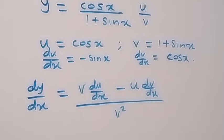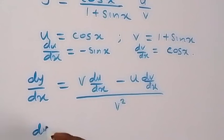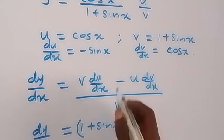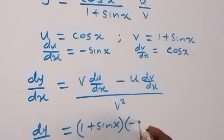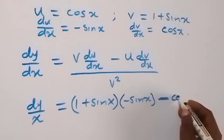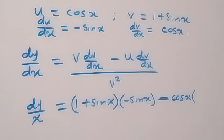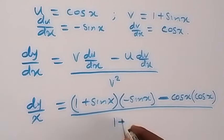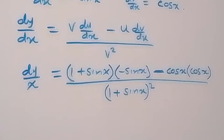When we substitute what we have now, dy/dx will be equals to v, that's 1 plus sin x, times du/dx, which is minus sin x, minus u, which is cos x, times dv/dx, which is cos x, over v squared. And v squared is 1 plus sin x squared. Now we can simplify further from here.